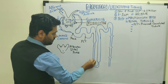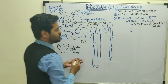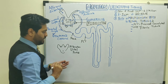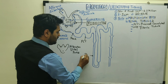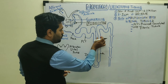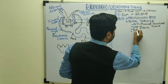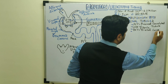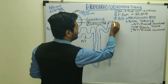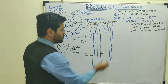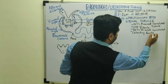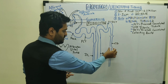The proximal convoluted tubule goes downward, takes a turn, and comes upward — this entire structure is known as the loop of Henle. After PCT, there is the descending limb and ascending limb of the loop of Henle. The ascending limb then enters another convoluted structure known as the DCT — the distal convoluted tubule. DCT of many nephrons collect into the collecting ducts, which are formed by the union of DCT from various nephrons.